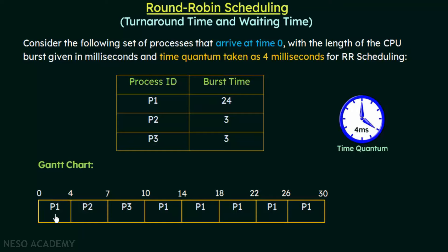After 4 milliseconds, P1 is preempted and the CPU is given to the next process in the queue, which is P2. P2's burst time is 3 milliseconds. At the 4th millisecond P1 is preempted and P2 gets the CPU. P2 is also allowed to execute for 4 milliseconds, but its burst time is only 3 milliseconds — less than the time quantum — so it executes only for 3 milliseconds, from 4 to 7. At 7 milliseconds P2 voluntarily releases the CPU.